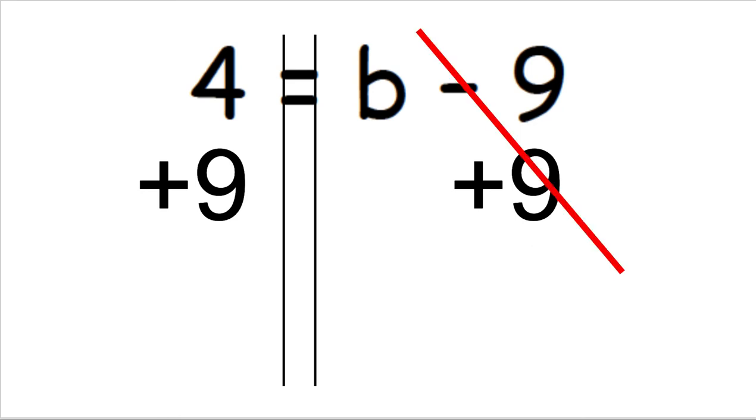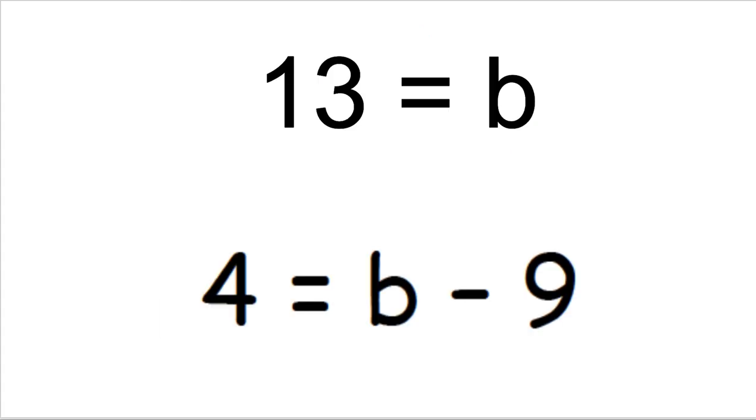That minus 9 and plus 9 cancel each other out, so there's nothing there. All that's left is b, and that's what I want. On the other side, I take 4 plus 9 and get 13. So all that's left is b equals 13.